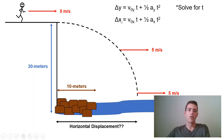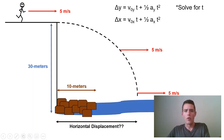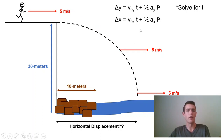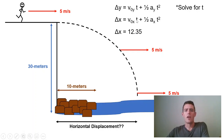I would use the same equation in the horizontal direction and solve for displacement. I know their velocity is 5, and I know time because I would have solved it — time ends up being about 2.47 seconds for this particular problem. Their acceleration in the x-direction is zero, so that cancels out, and it's 5 times 2.47, which gives us 12.35 meters. 12.35 meters is greater than 10 meters, so they would have cleared the rocks.